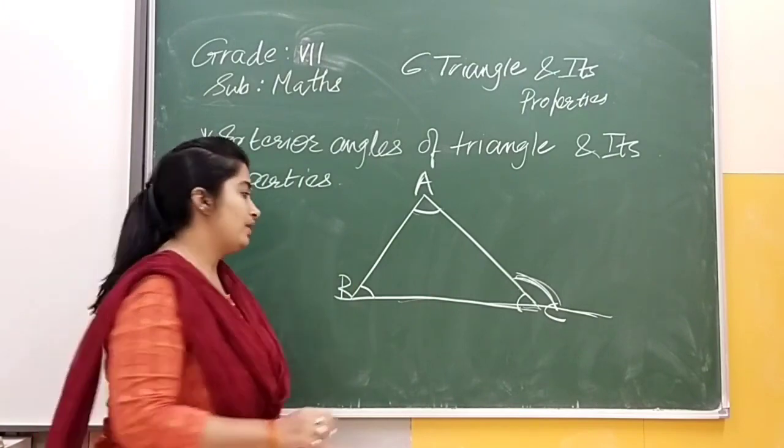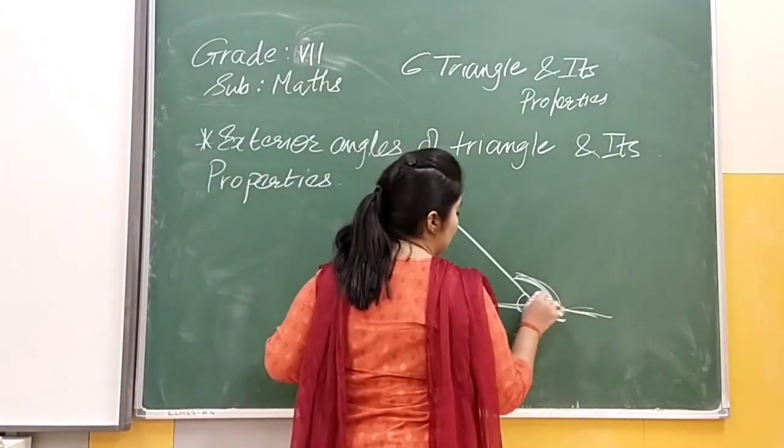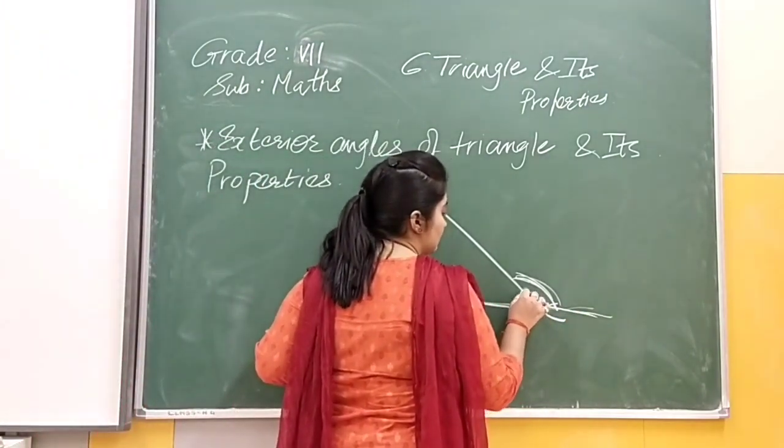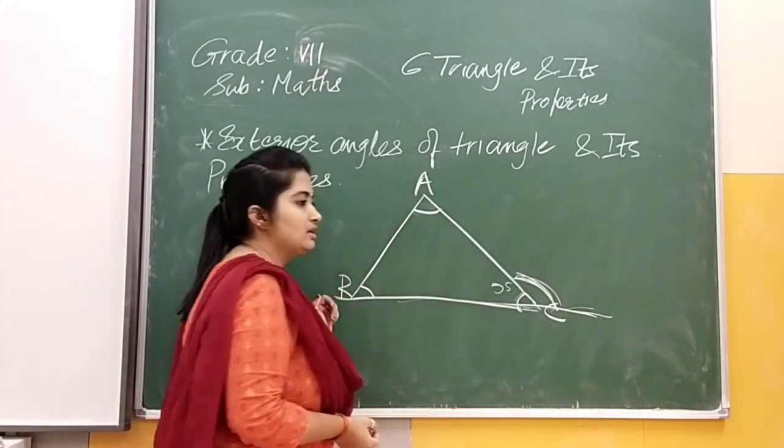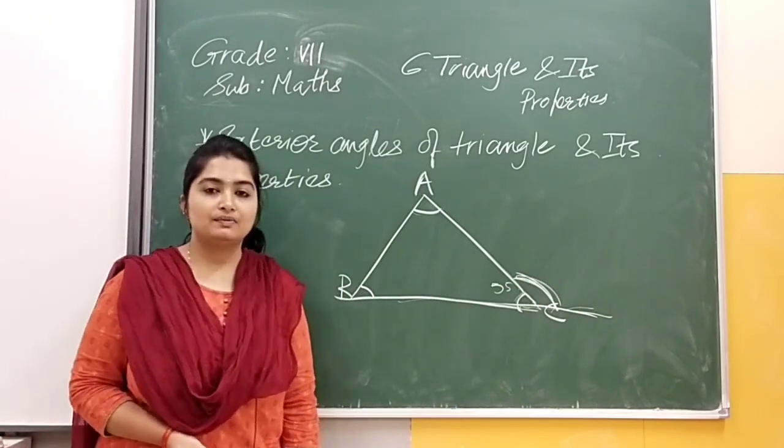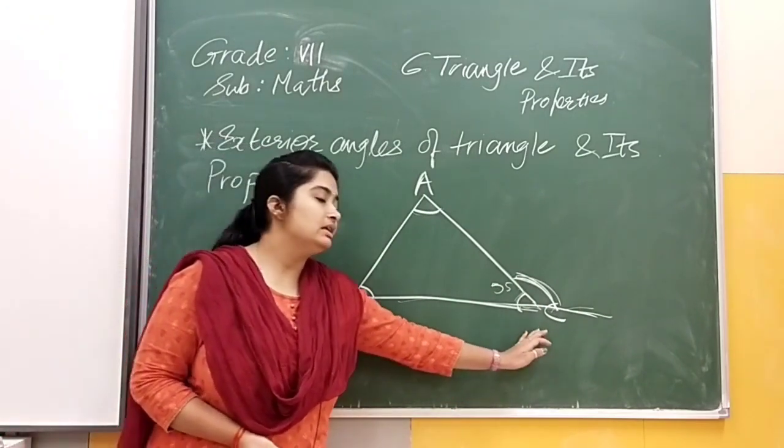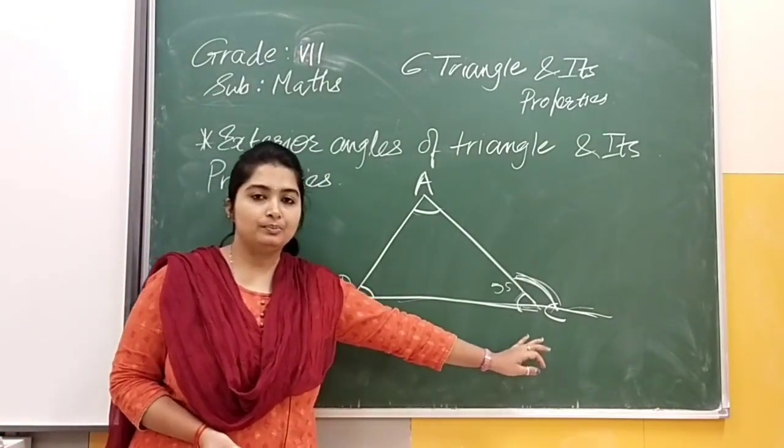We have discussed about linear pair. These two are on one line, right? So for suppose that is 55. So what will be this angle? That will be 180 minus 55. Why 180 minus 55? Because they are linear pair.